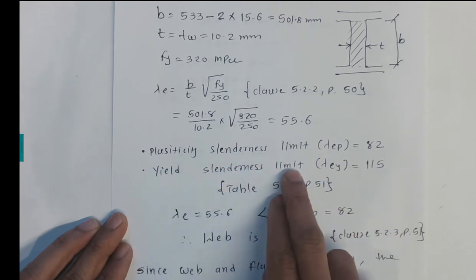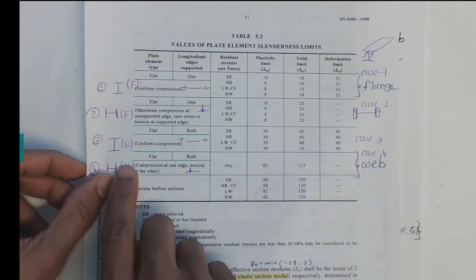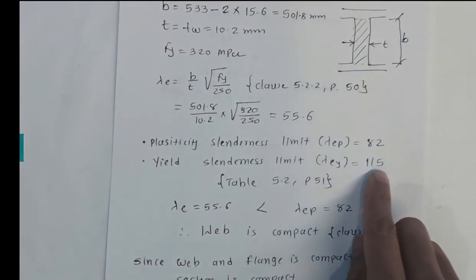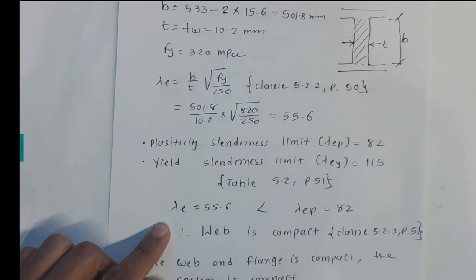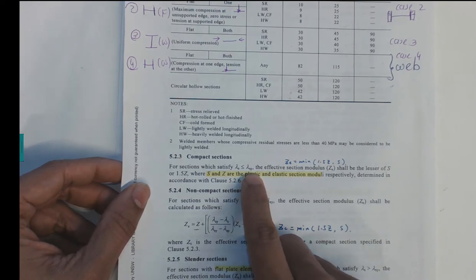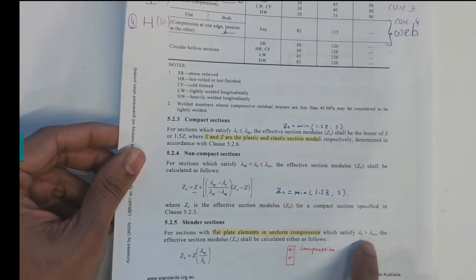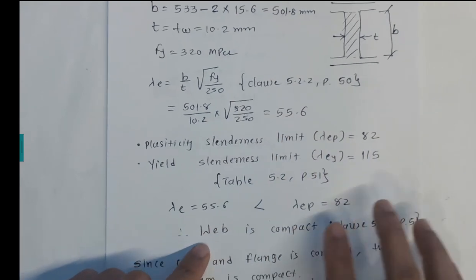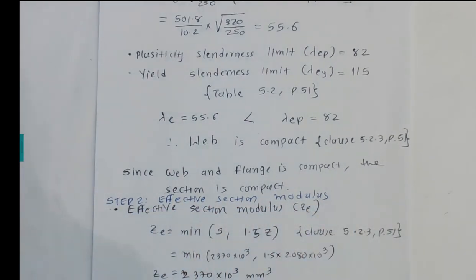From Table 5.2 for the web, λ_EP = 82 and λ_EY = 115. Since λ_E = 55.6 is less than 82, the web is compact. With both the flange and web compact, the overall section is classified as compact.